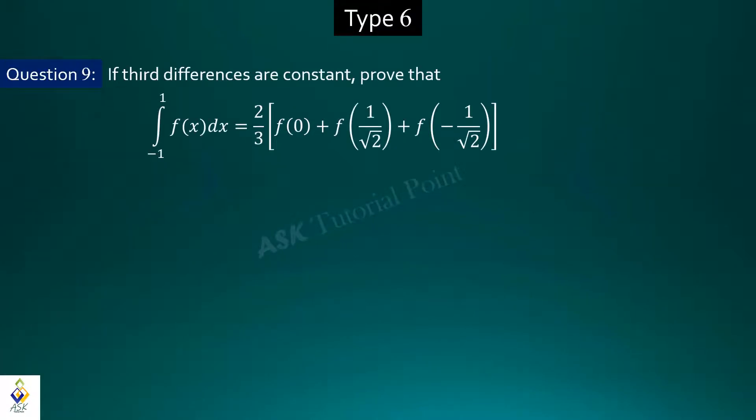Now let's discuss type 6 question. Question number 9: this question is similar to question number 8 where we need to show left hand side equals right hand side. But here we need to observe the function given.